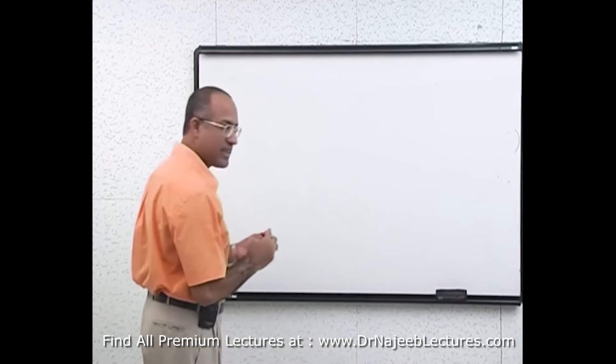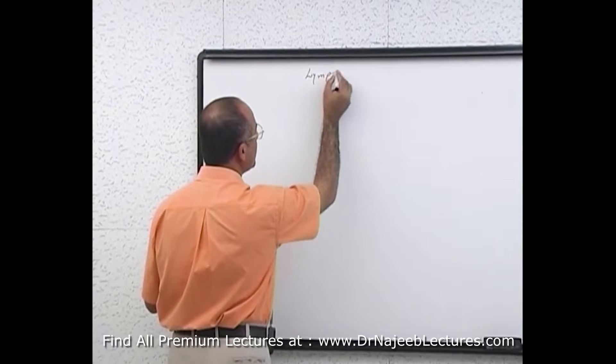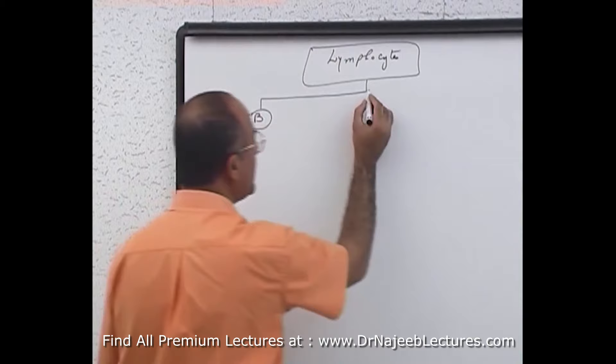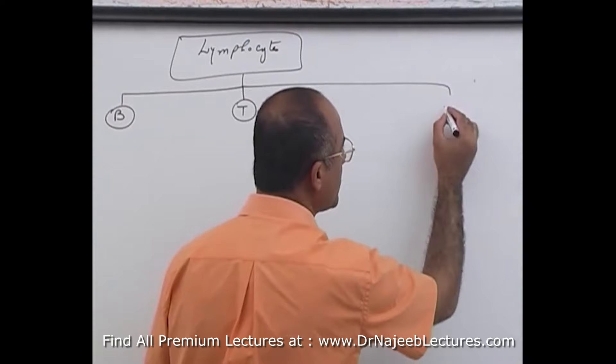Lymphocytes can be divided into B lymphocytes and T lymphocytes, and lymphocyte-like cells which are called natural killer cells, which are large granulated lymphocytes.